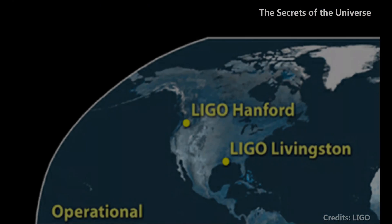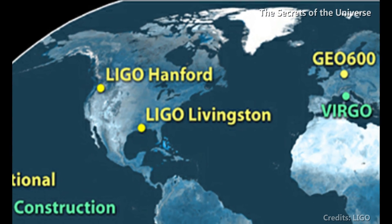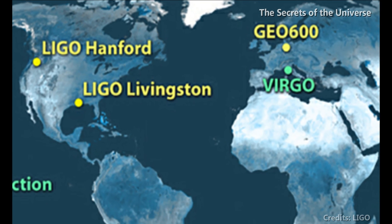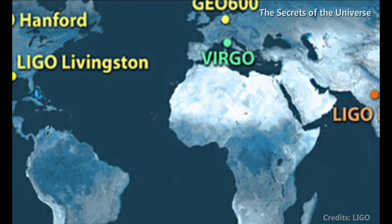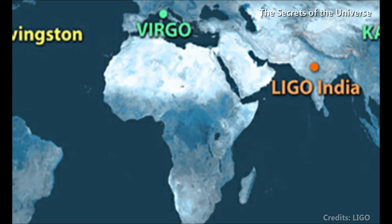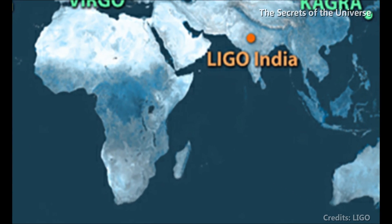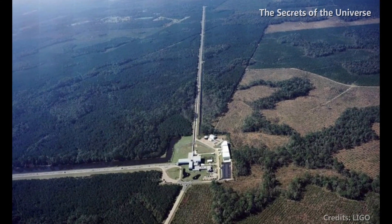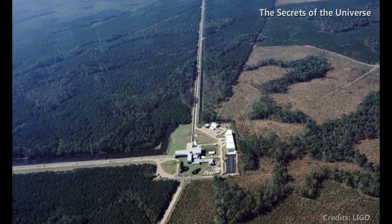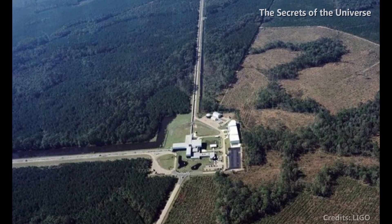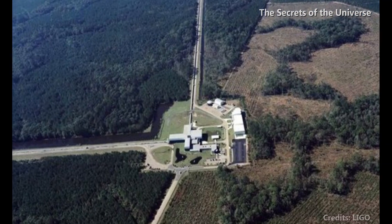Currently LIGO is operating in two observatories and now it will build its third one in India in collaboration with MIT Cambridge, RRCAT Indore, Ayuka Pune and IPR Ahmedabad. This will further strengthen its network around the world and help in extracting the best information about the gravitational waves.